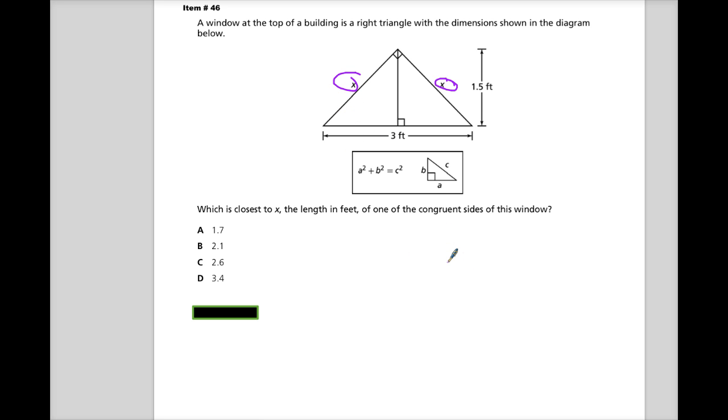Just kind of an FYI there. So this is splitting it in half. This is a perpendicular bisector, this part right here, the line. Anyway, so you have to split three in half, long story short.